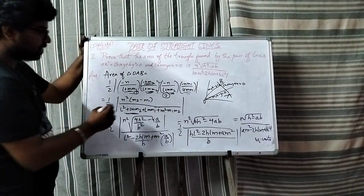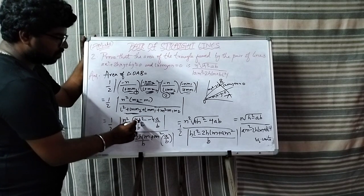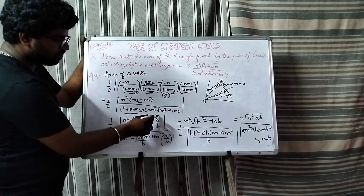So now m2 minus m1 is nothing but root over 4 into h square by b square minus 4a by b.